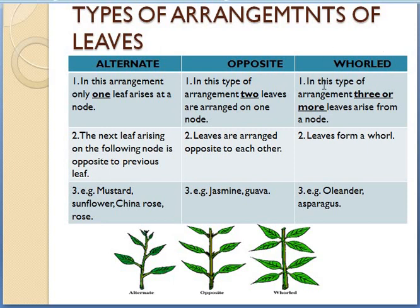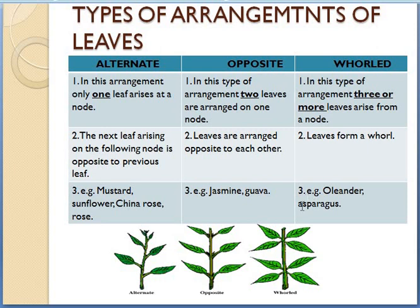The third type of arrangement is whorled arrangement. In this type, three or more leaves arise from a node. From one node you can see four leaves arising, and from the second node again four leaves arise in a group. In whorled arrangement, leaves arise in a group, all in opposite directions from the same point in a circular pattern — the leaves form a whorl, which means a circular pattern. Example: Oleander and Asparagus.